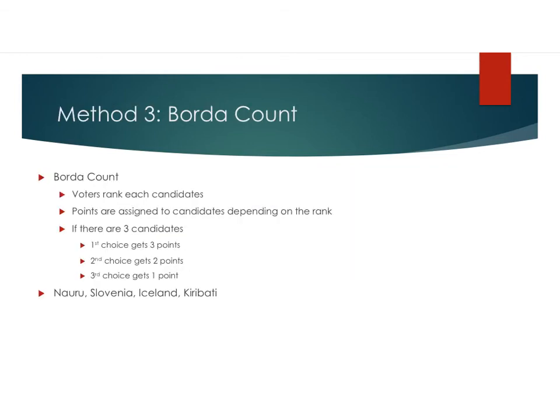So how do we consider this? Well, in this case we'd do something called the Borda count. This system of voting ranks each candidate, and then points are assigned to candidates depending on the rank. If there are three candidates, the first choice gets three points, the second choice gets two points, and the third choice gets one point. If you had ten candidates, the first choice gets ten points, all the way down to the tenth choice getting only one point. And this is also used in several countries.